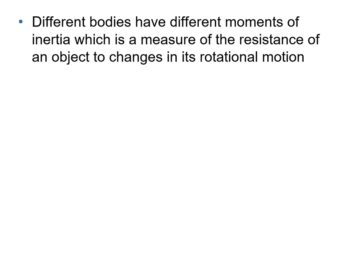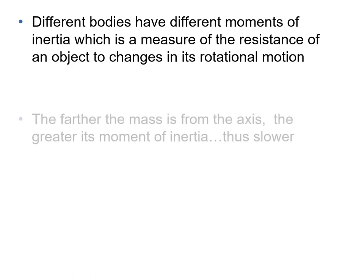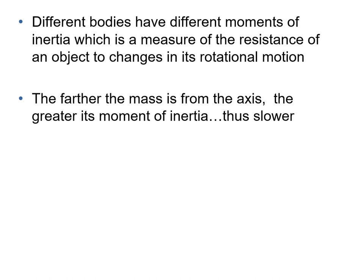Different bodies have different moments of inertia, as you've just seen with the tables. That's a measure of the resistance of an object to changes in its rotational motion. It's related to Newton's first law, which is considered the law of inertia. The farther the mass is from the axis, the greater is its moment of inertia, so it's slower. Let's look at an example.